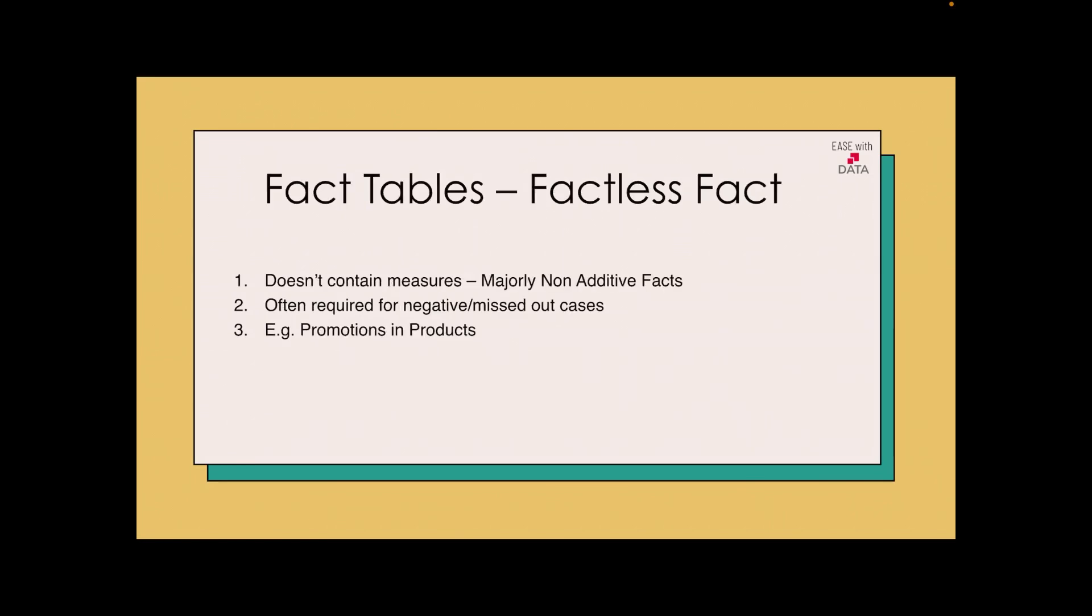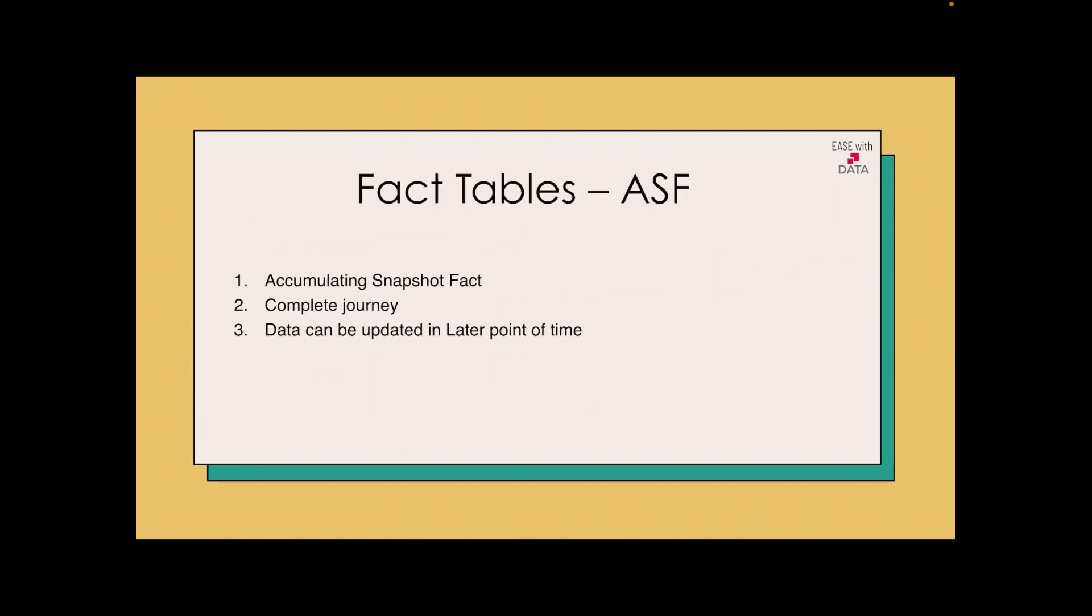In a factless fact, basically there are no additive facts. It is often required for missed out and negative cases. We will deep dive into one of the examples.